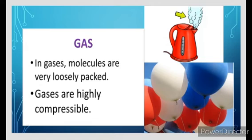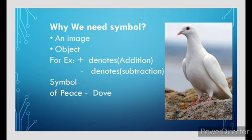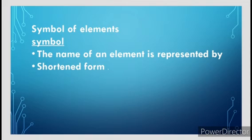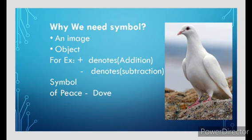Now we see symbols. Why symbols? Why do we need symbols? In science, we give the symbol of elements. We need symbols of elements. The name of an element is represented by a shortened form called a symbol. The symbol can be an image or object. These stand for some meaning in symbols. We can use images, objects, etc. For example, addition is denoted by the plus symbol, and subtraction is denoted by the minus symbol. So we can easily identify. We need not write the full name. So easily we can use the symbol and it can be easily identified.